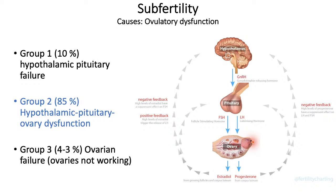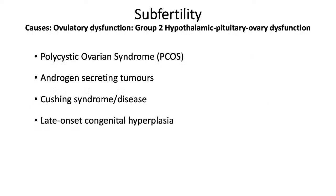Group 2 involves a problem with the axis and is mainly made up of patients with PCOS — polycystic ovarian syndrome. Other rarer causes in this group include androgen secreting tumours, where androgens antagonise oestrogens at the hypothalamus, pituitary and ovary. For example, in Cushing's patients 50% have polycystic ovaries. You might suspect an androgen secreting tumour if you saw a coarse voice, clitoromegaly, male muscle distribution, especially with rapid recent onset. But PCOS is the most common in this group.